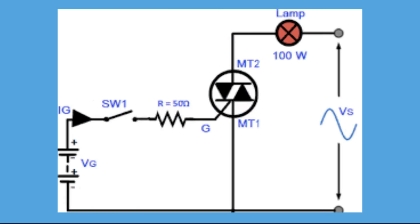This 15 watts can be readily dissipated as heat by connecting the TRIAC to a suitable heatsink. Hence, the TRIAC is a suitable AC power switch. Having reminded ourselves about the basic characteristics of a TRIAC and how it works, let us now examine how a TRIAC can be connected as an AC line power switch.